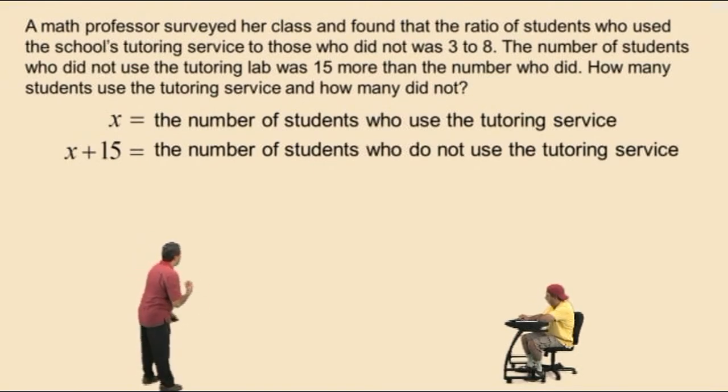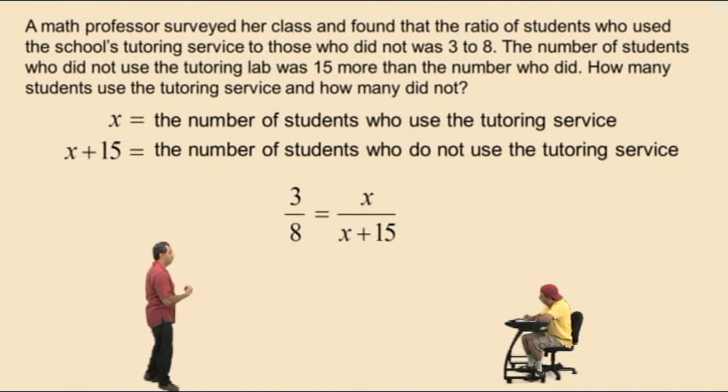Now, from the information up there, we were given that the ratio of those who do to those who do not is 3 to 8. And that must equal the ratio of x to x plus 15. This gives us our proportion.